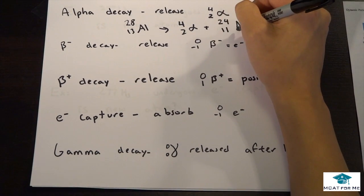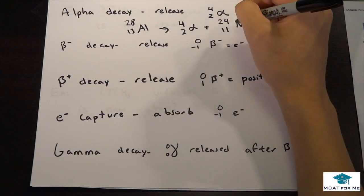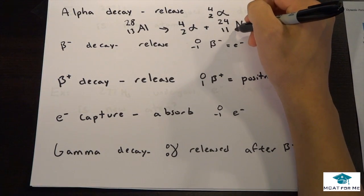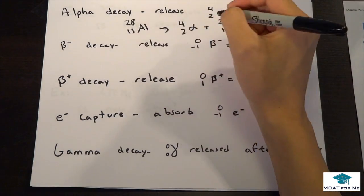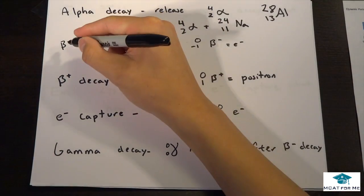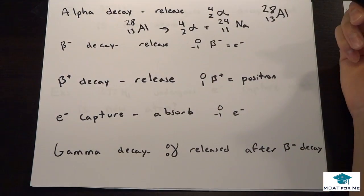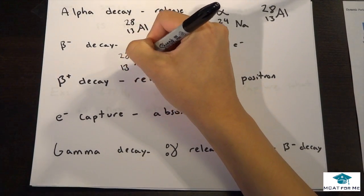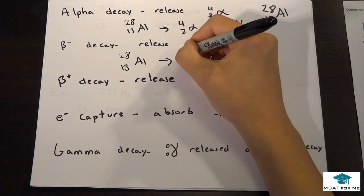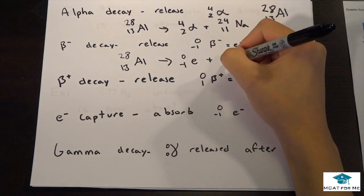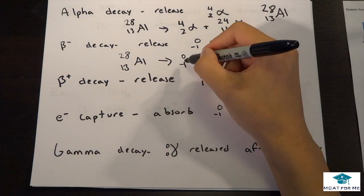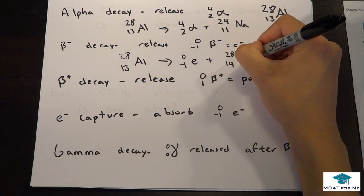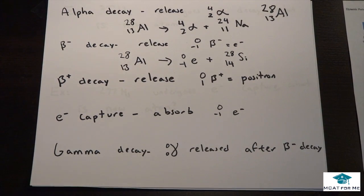So remember that because a lot of times on the test they'll just leave this as aluminum and they'll say, oh well the numbers are right, but that would be wrong. If this was aluminum rather than sodium, that would be wrong. So now beta decay, and this is beta minus. We're releasing an electron. So all these numbers have to add up, right? So this is minus 1, 14 minus 1 is 13, so that makes sense. And again, this is no longer an aluminum atom, it's a silicon atom.